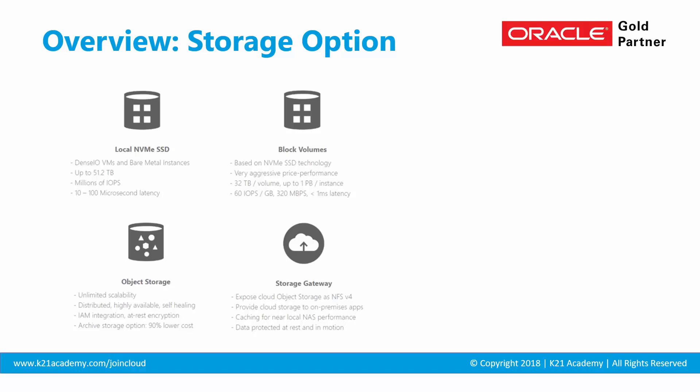There is also a storage gateway, which is essentially the entry point or communication channel for connecting to object storage using NFS version 4. Then you have file storage service, which is a shared file system that can be attached to multiple compute instances. This is useful when coming from an application like Oracle E-Business Suite or any application needing a shared file system, mounted using NFS. In subsequent lessons we will cover how to create this file storage service, how to mount it using NFS, and what NFS — network file system — means at a high level.